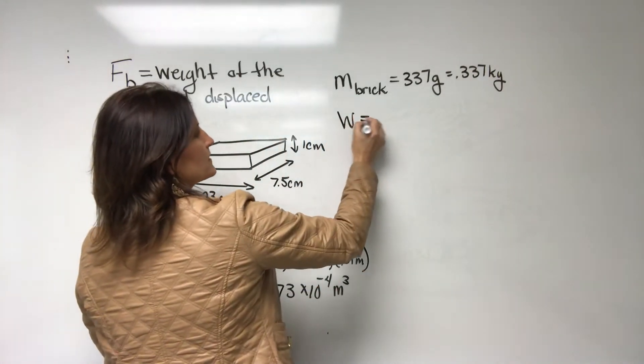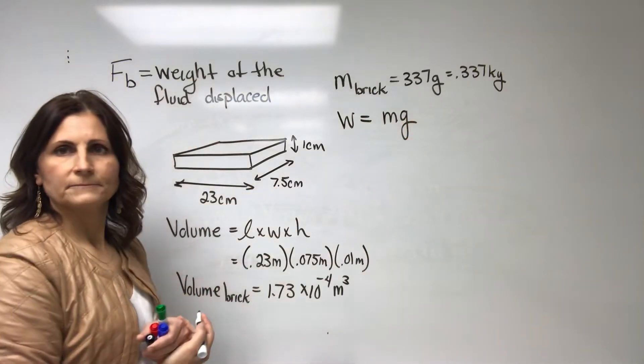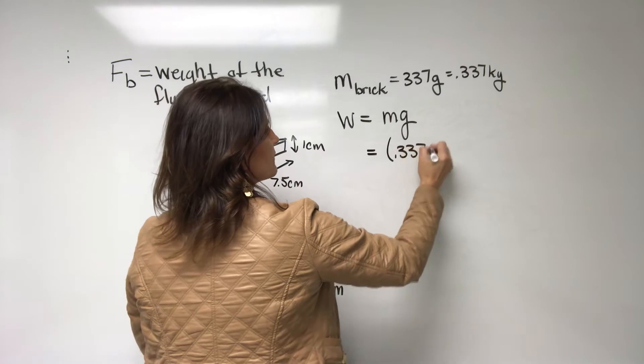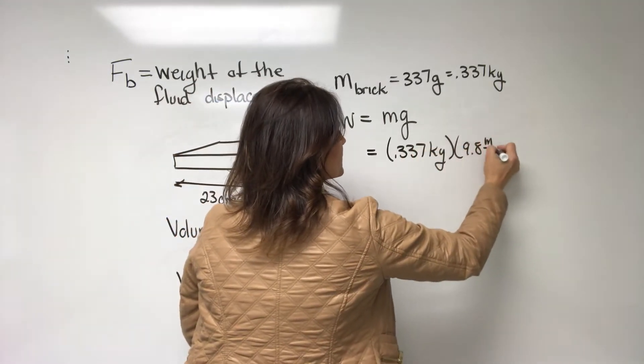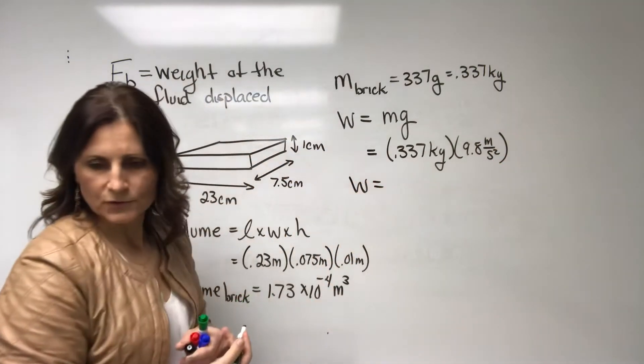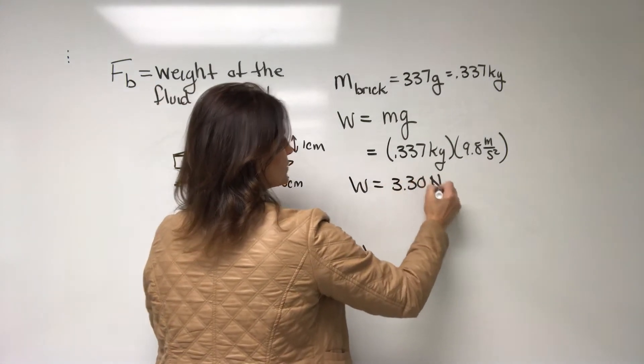So the weight of this brick would be its mass times acceleration due to gravity. All right. So the weight of the brick would be 0.337 kilograms times 9.8 meters per second squared. All right. So the weight of our brick is equal to 3.3 newtons.